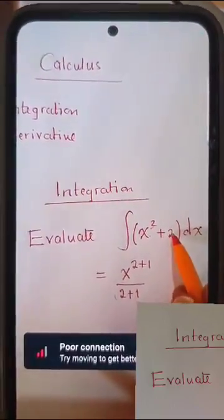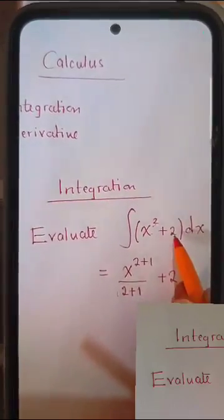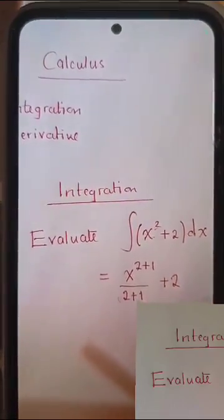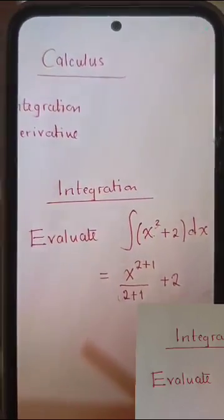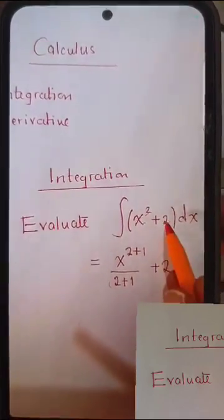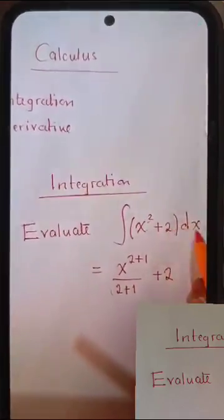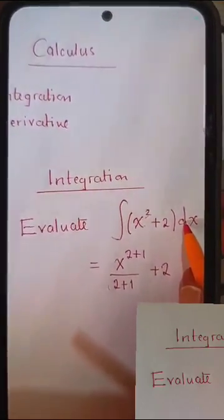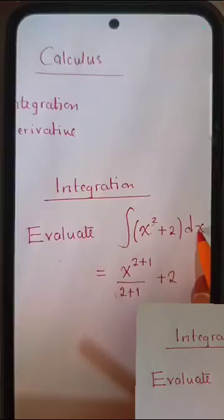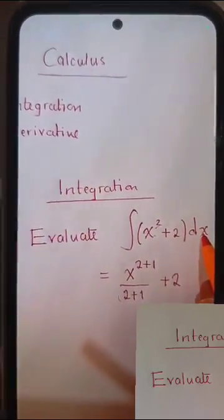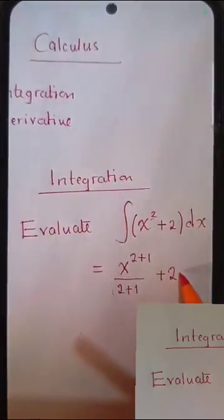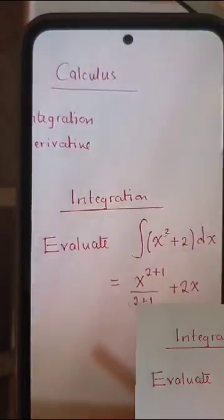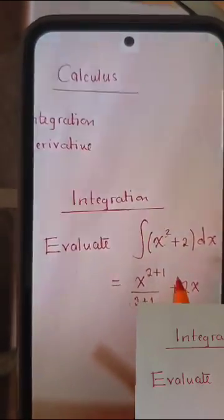Now, when you see a number without a letter, can you see this number? It doesn't have a letter. We call it a constant. So the rule of integration is that when you've got a number, you look at D. Can you see that D here? Yes. The letter after D is what? It's X. Yes. So we are going to say 2X. That's all. That's a number without a letter.